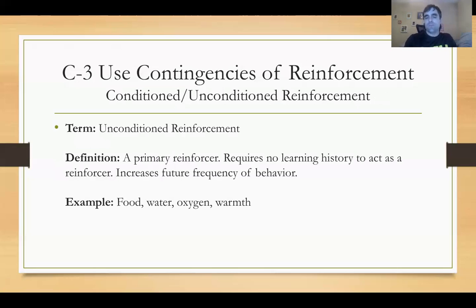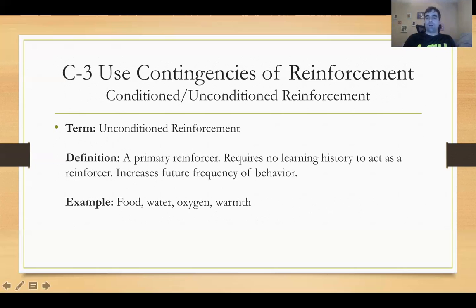Conditioned and unconditioned reinforcement. We know we have our contingencies — we're setting up if-then statements. So if you read, then you get reinforcement. What are our two types of reinforcement? We have conditioned and unconditioned. Unconditioned reinforcement is considered primary reinforcement. It requires no learning history and no pairing to act as a reinforcer. As humans, we're all innately programmed so that these will serve as reinforcement — we don't need to learn it, we don't need pairing. Food, water, oxygen, warmth — all these things will serve as reinforcement.